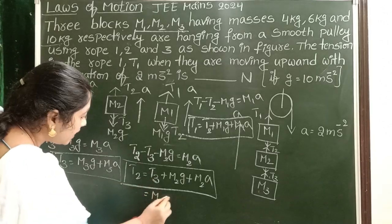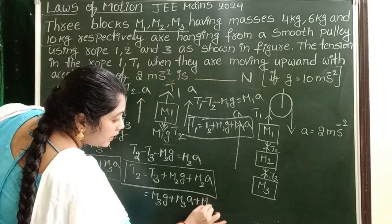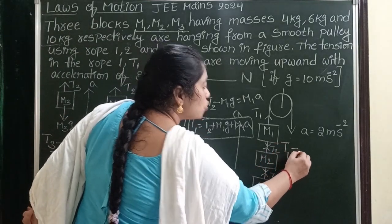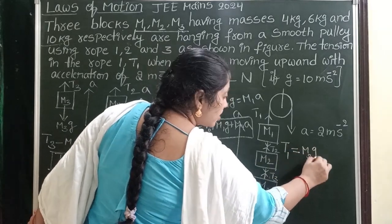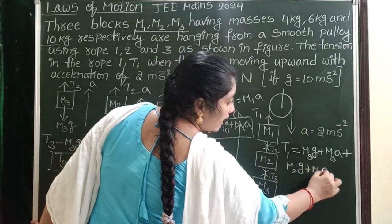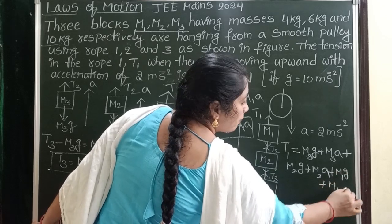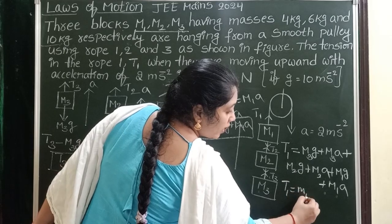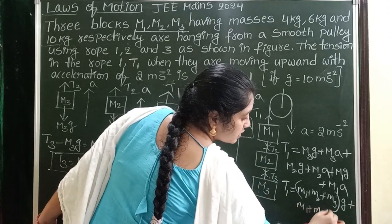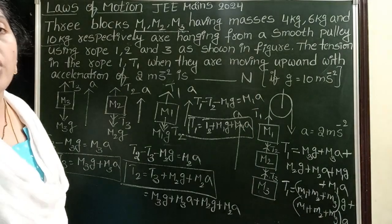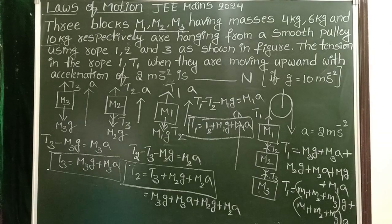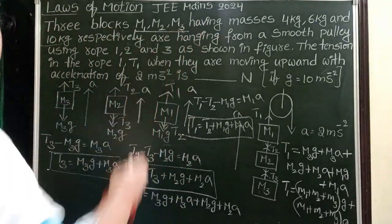We know T3 = M3G + M3A, and T2 = T3 + M2G + M2A. Substituting into the expression for T1 gives: T1 = (M1 + M2 + M3)G + (M1 + M2 + M3)A. That is, the sum of the masses multiplied by acceleration due to gravity, plus the sum of the masses multiplied by the upward acceleration. This is the formula to calculate tensional force T1.